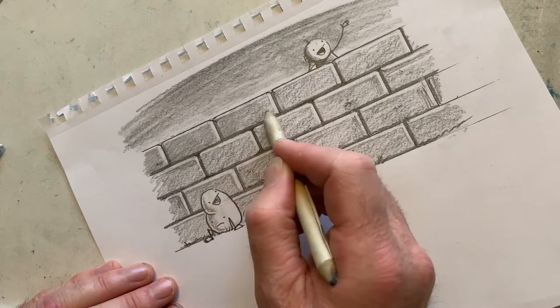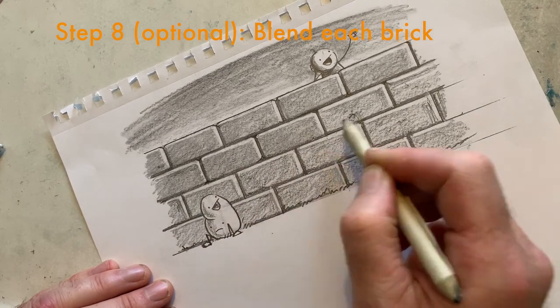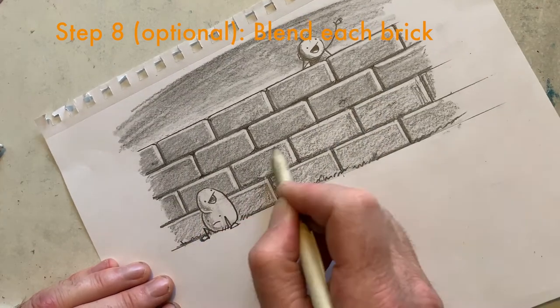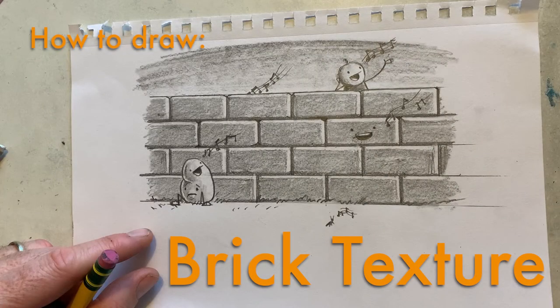Oh, and blending stumps work great with this sort of thing. Just make sure you point your blending stump towards the highlights so you don't accidentally lose control and smudge them. And there you go. Bricks. Have fun. Thanks for watching.